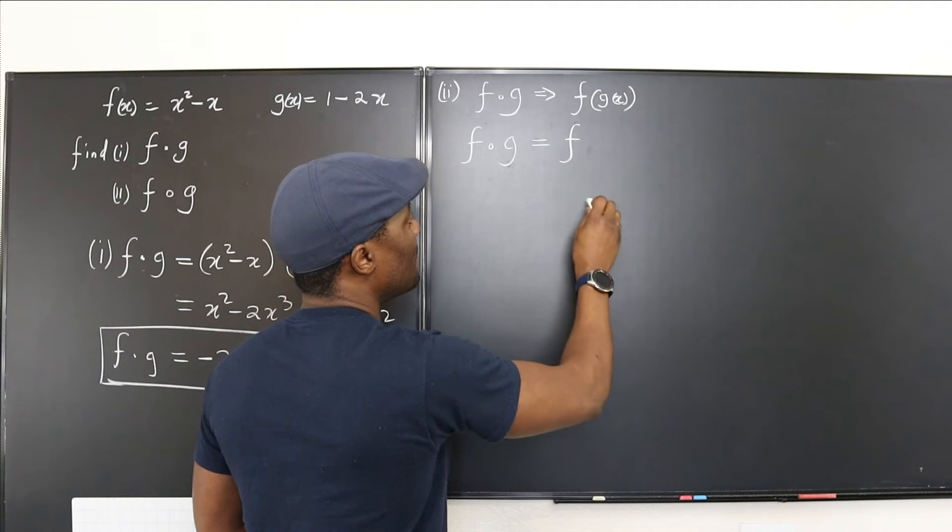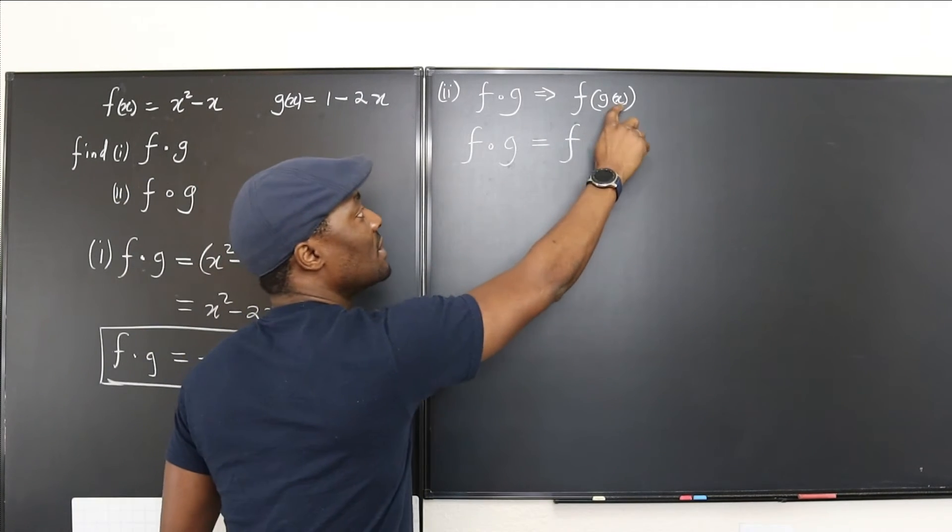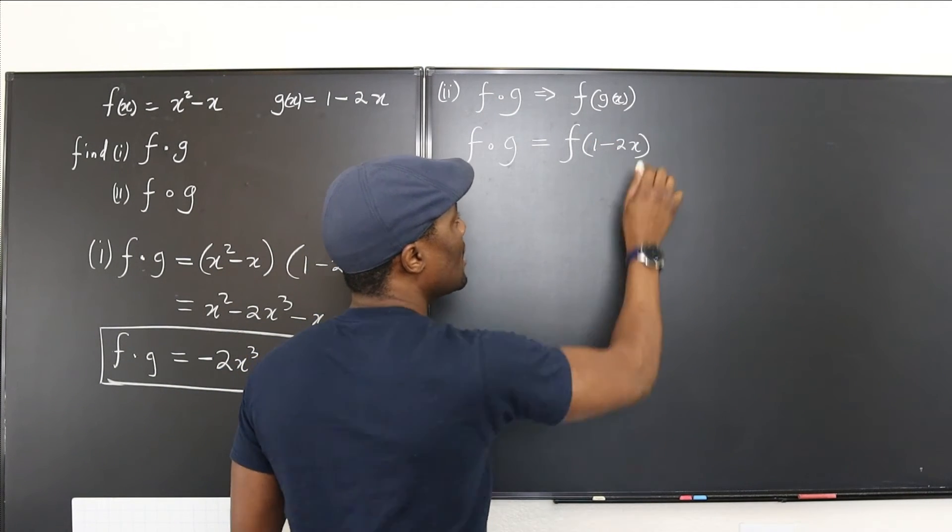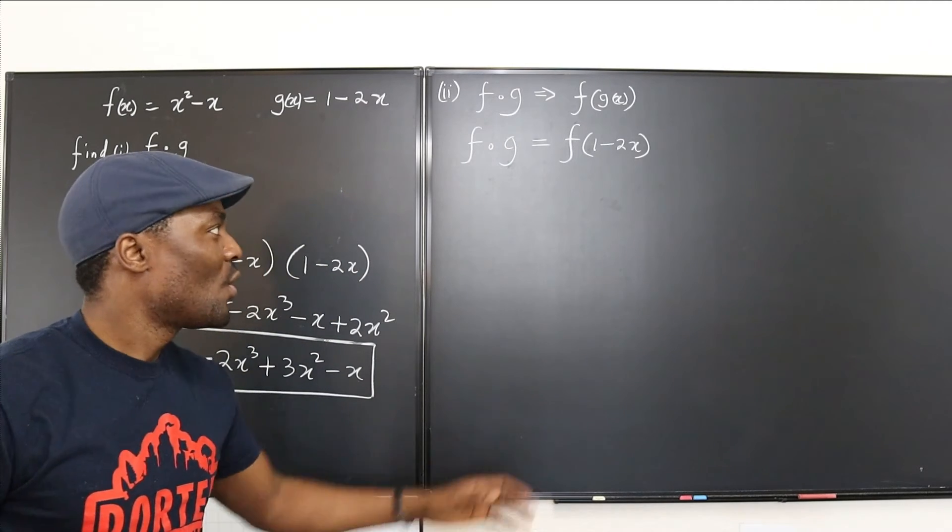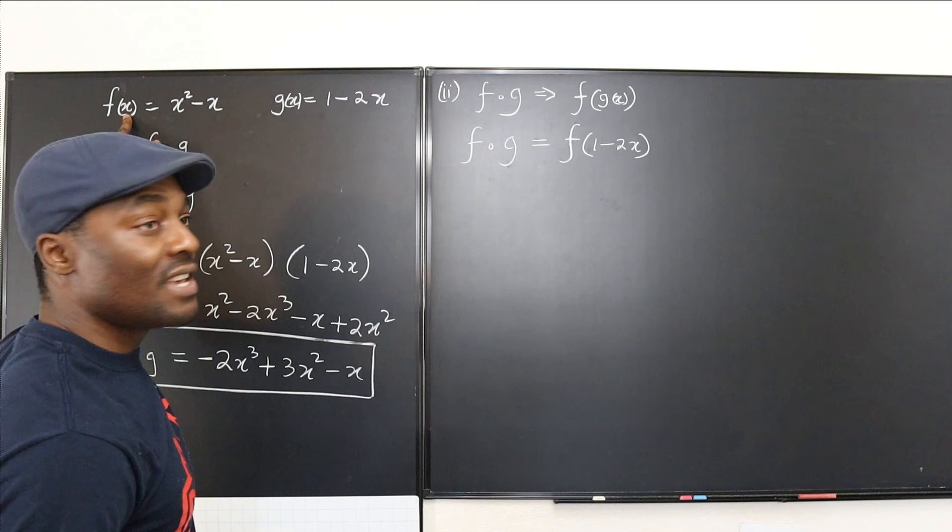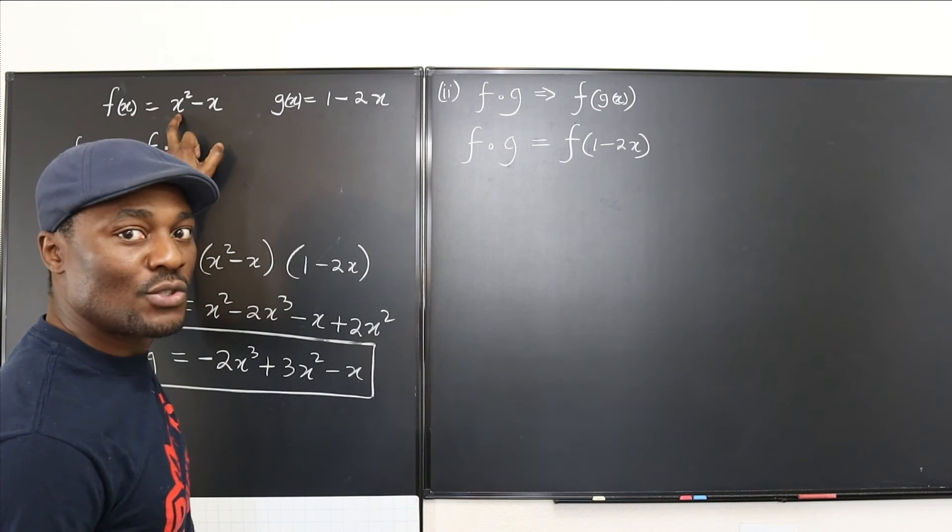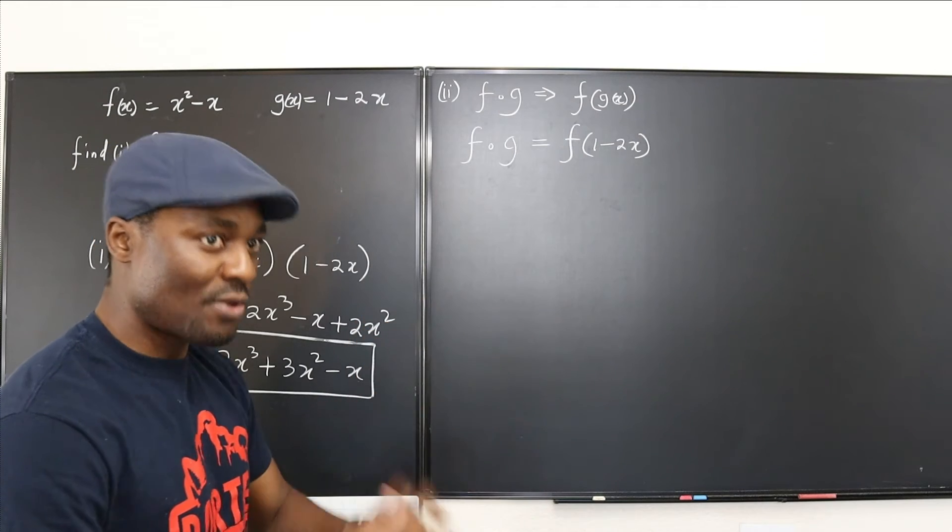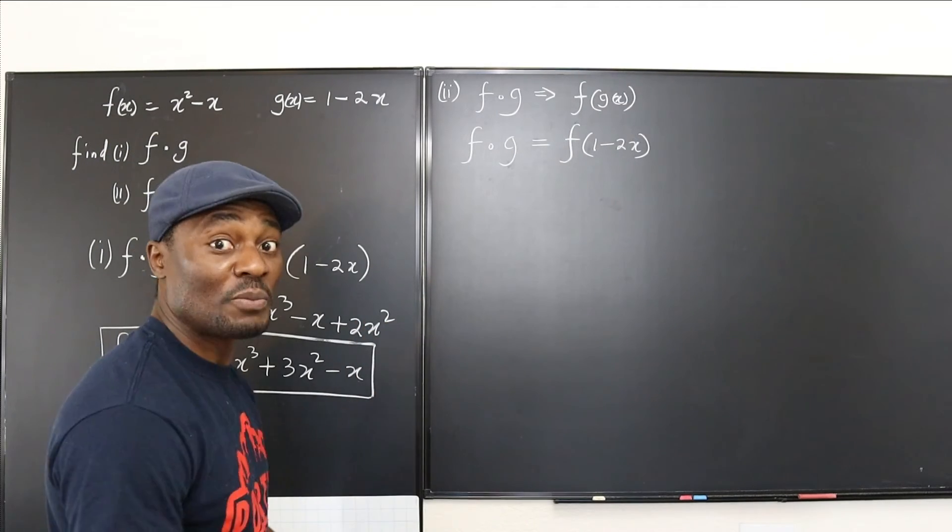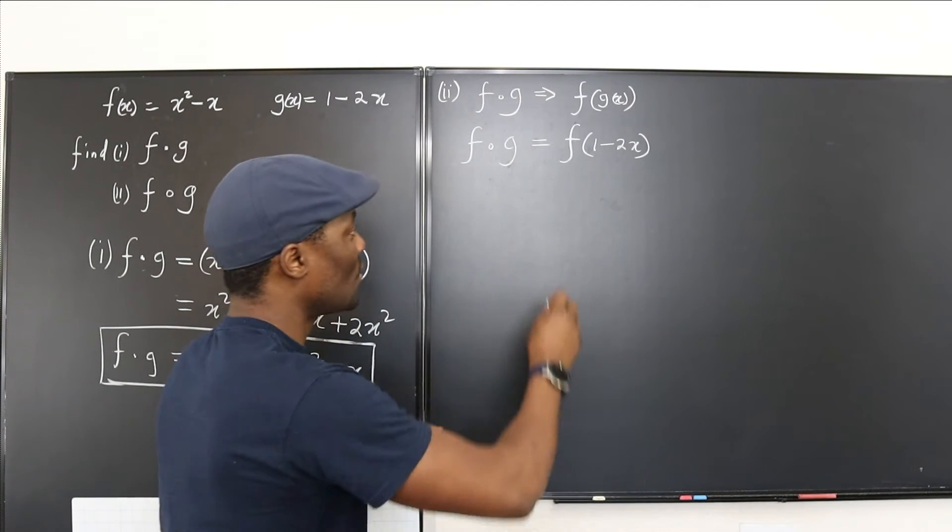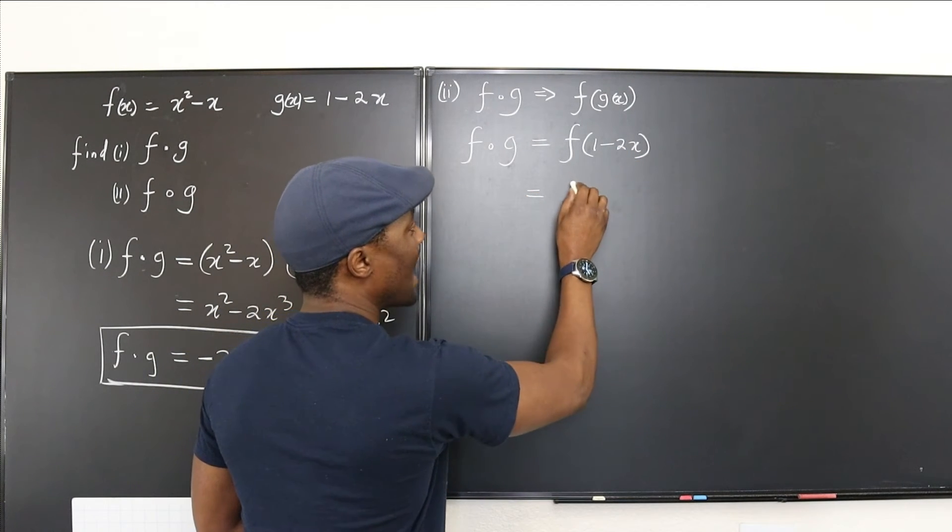So the question you ask yourself is, what does f do to an input? Look at this. When you give it x, it squares it and subtracts x from it. Square it, subtract x from it. Subtract the input from it. So the same thing: square it, then subtract it from it. So this is going to be the same thing as square it, you see, square, then subtract the same thing from it.